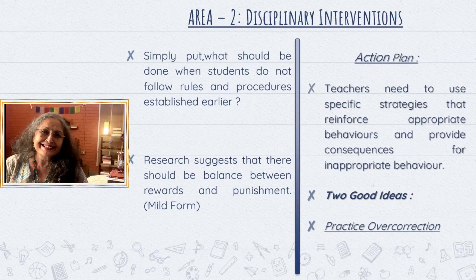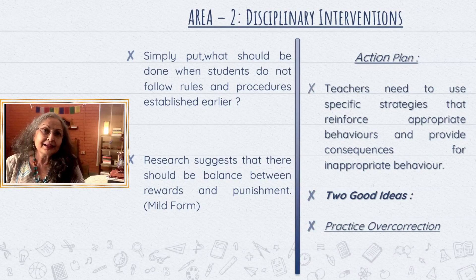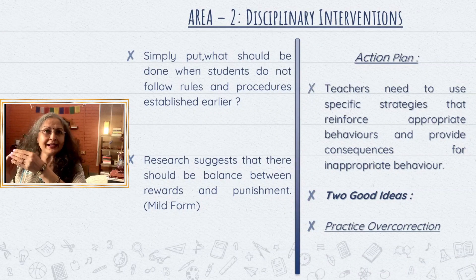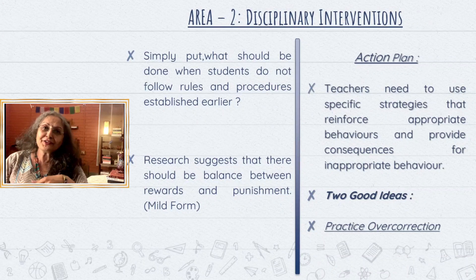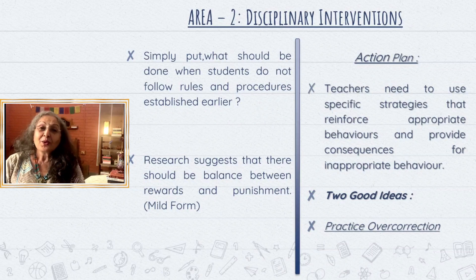You might go a step further and say: you've torn this book, sit down and mend it — here is Fevicol, here is tape, bind it. But when practicing over-correction, while the student is quietly and meditatively repairing the book, you bring another three or four torn books from your shelf which this student hasn't torn, and tell them: why don't you mend these also? This means correcting more than the original fault.